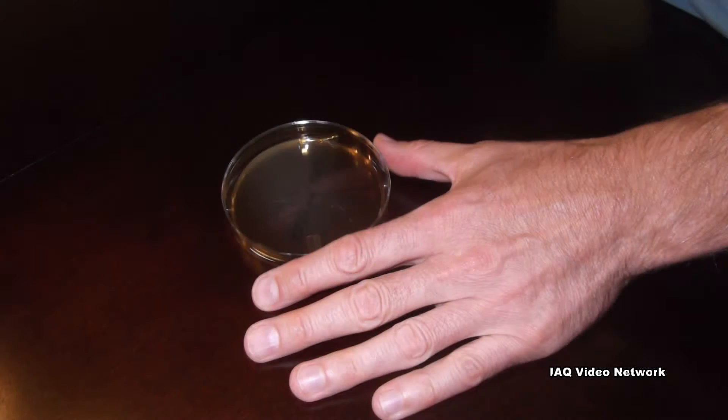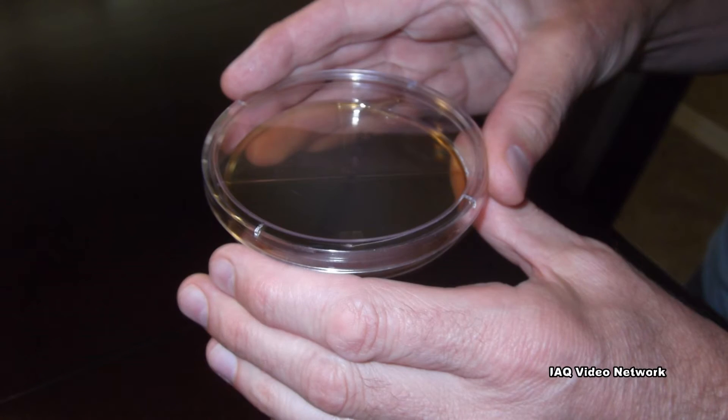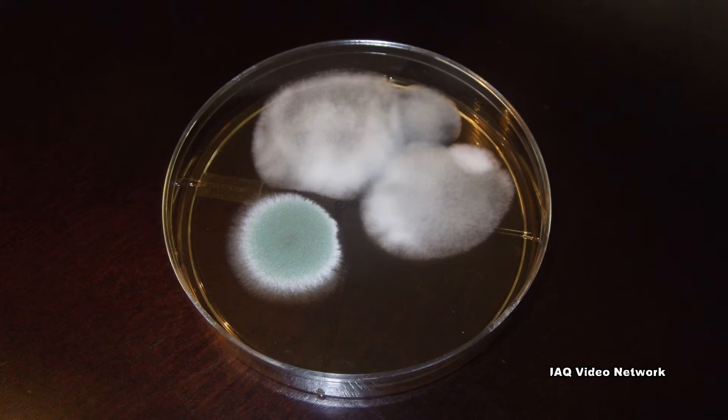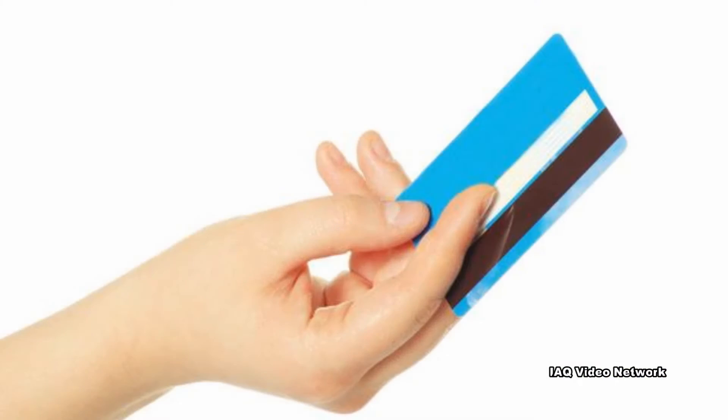People are instructed to leave the plate out for a specific amount of time and then put the lid back on and monitor for any mold growth over specific time periods. If mold is found to be growing, the consumer then has the option to send the petri dish to a laboratory to have it analyzed, usually for an additional fee.